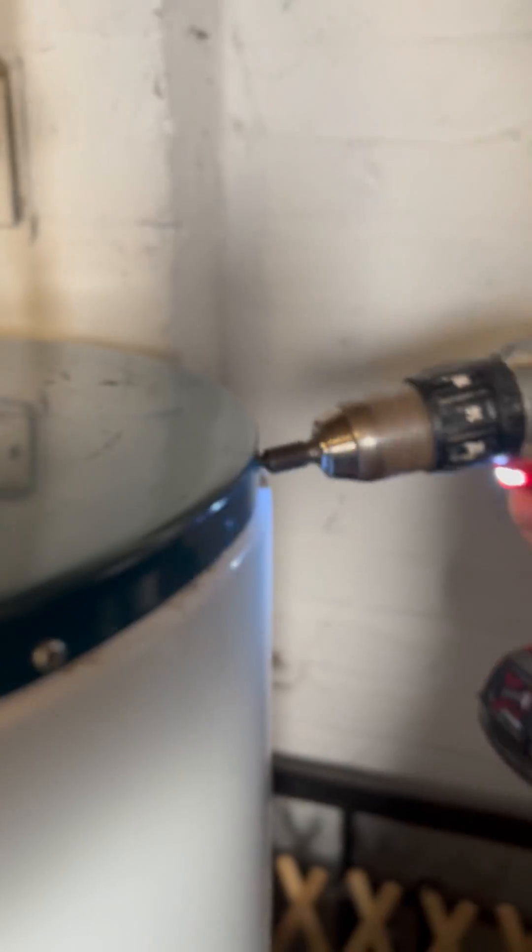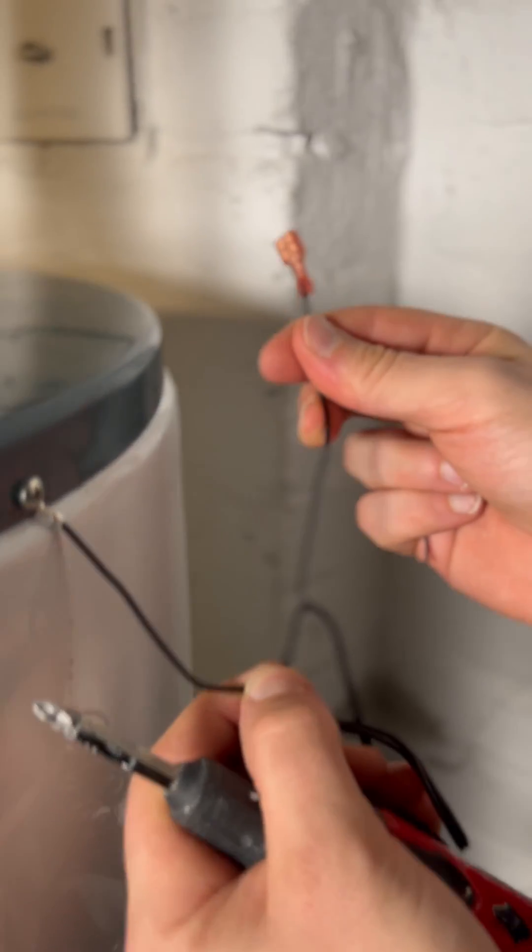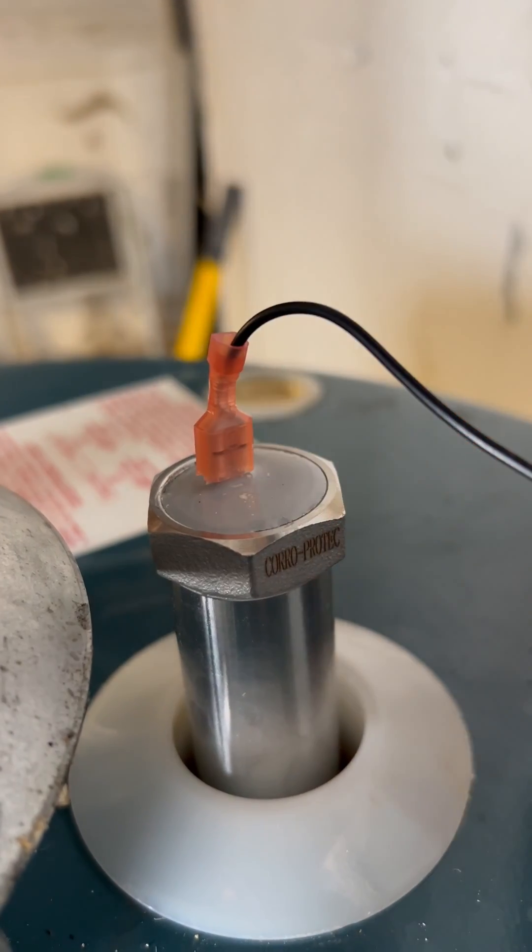So gone are the days of changing your anode rod every three to five years, which you weren't doing anyways. Because the CoralProtect anode rods are a one-time quick and easy installation that requires no maintenance and are designed to fit all water tanks.